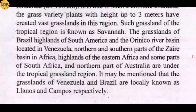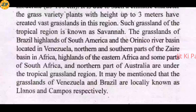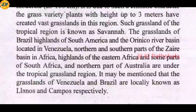The grasslands of the Brazil highlands of South America, the Orinoco River basins located in Venezuela, the northern and southern parts of the Zaire basin in Africa, the highlands of eastern Africa, some parts of South Africa, and the northern part of Australia are all under the tropical grassland region. Many places around the world have Savana grasslands.